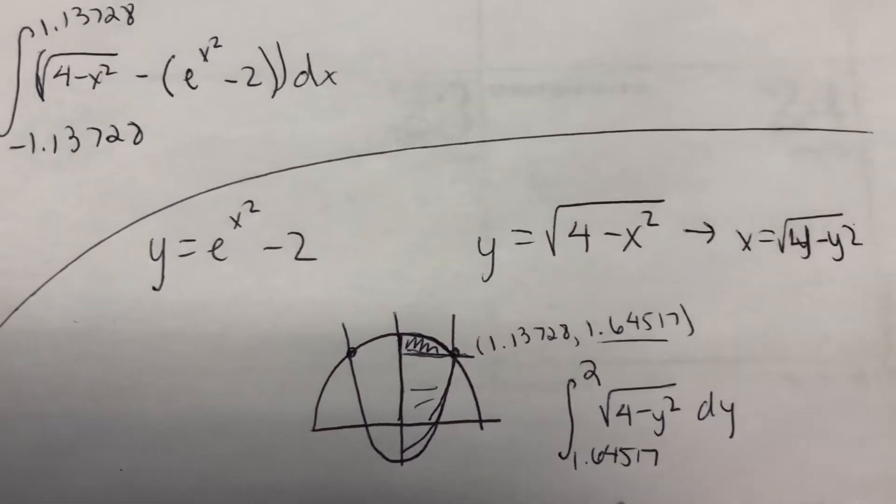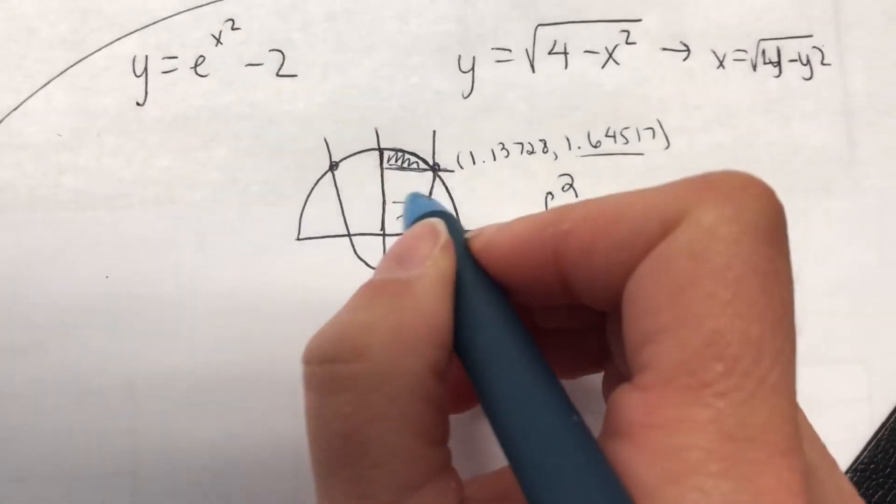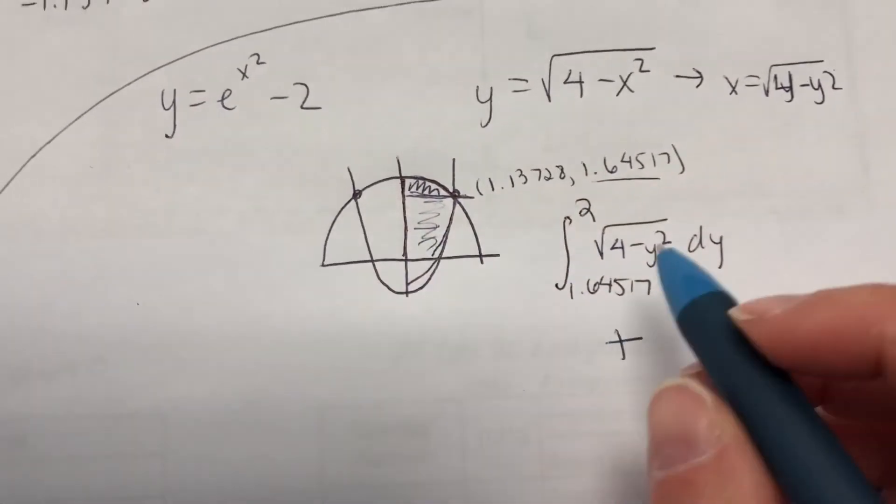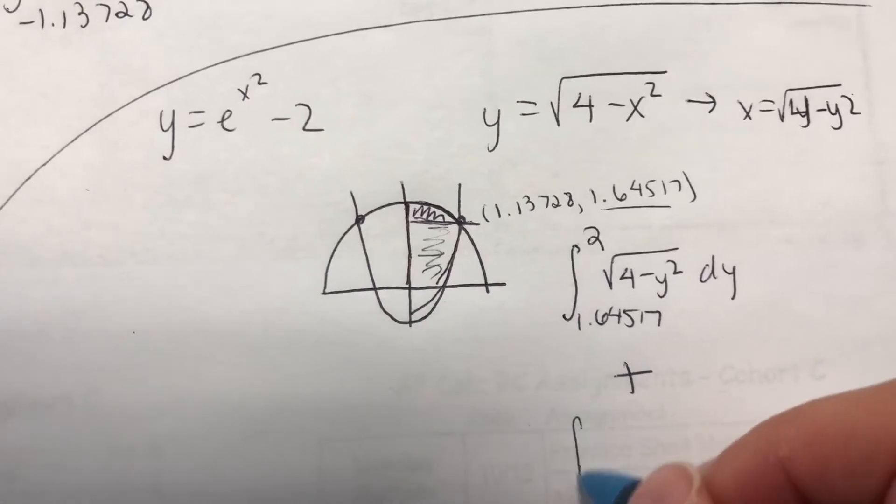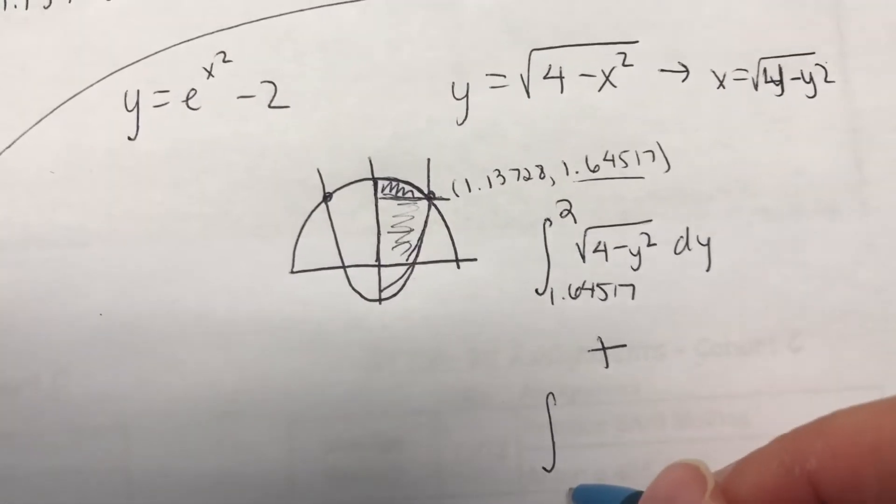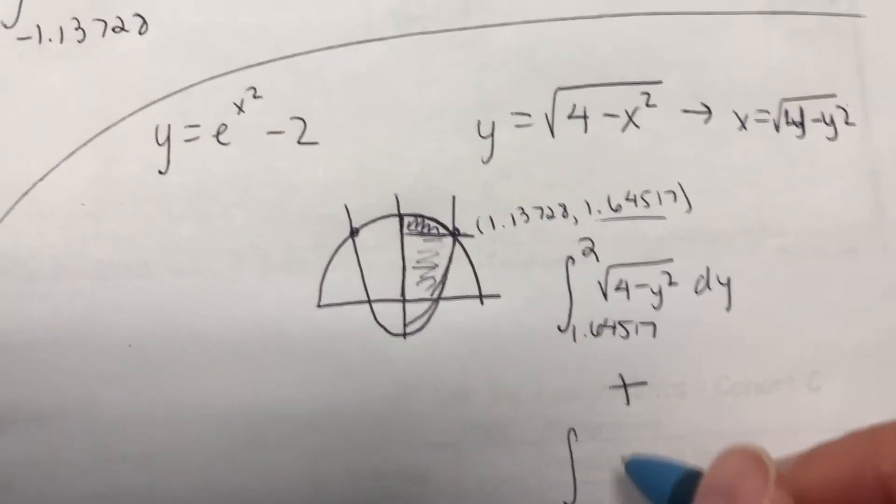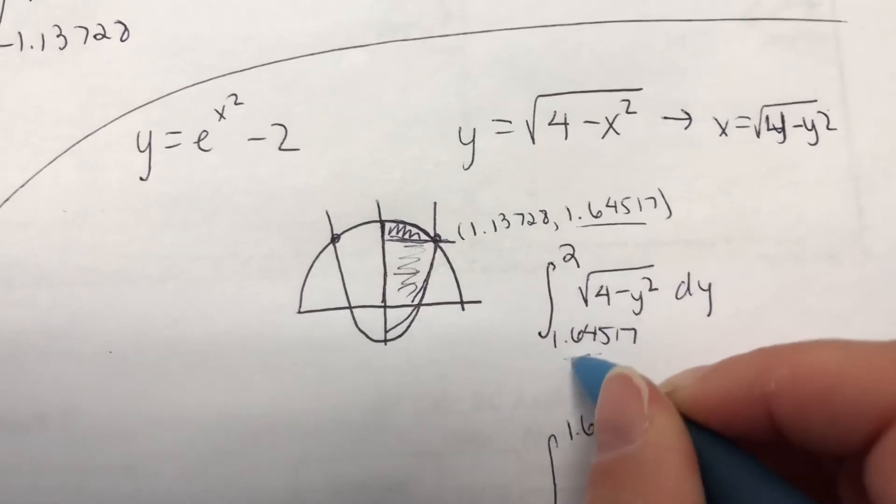And then you're going to have to add that to this piece of it. So now it'll just be the integral from negative 1 up into this, where this one left off.